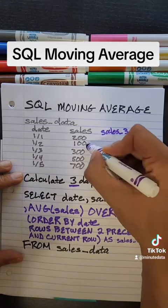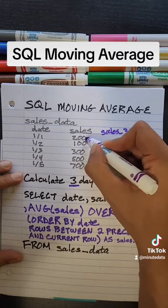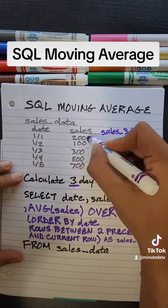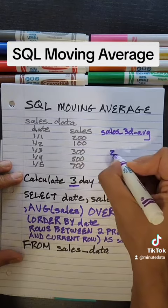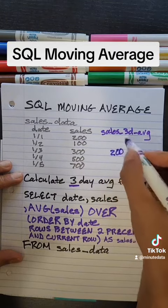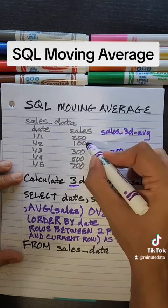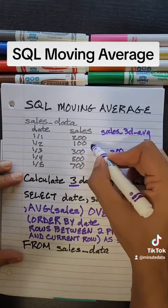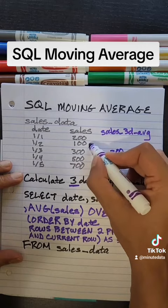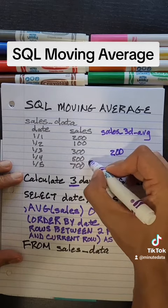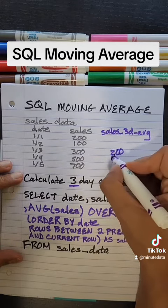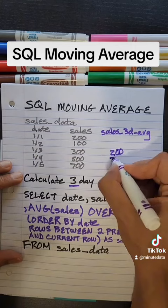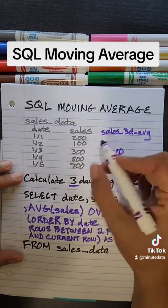So what does that look like? We take rows one, two, three — that's 600. 600 divided by three is 200. Then we move our window to where we have 100, 300, 500 — that ends up being 900 divided by three, which is 300.